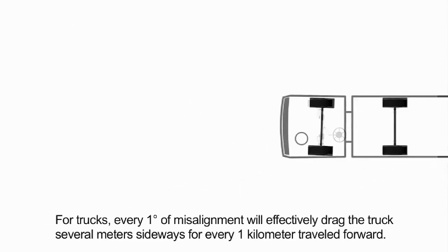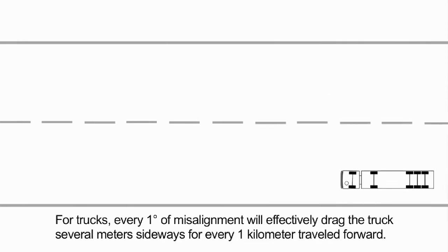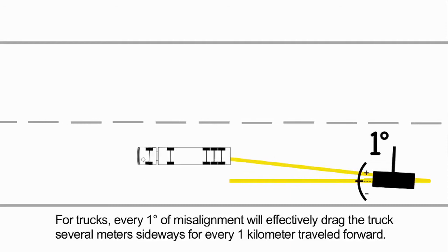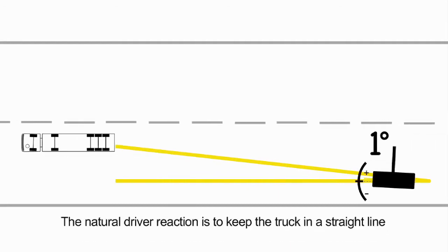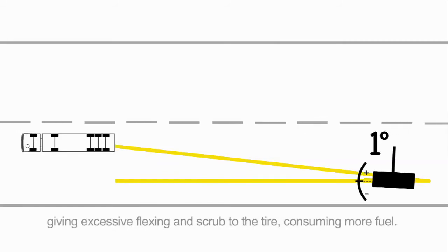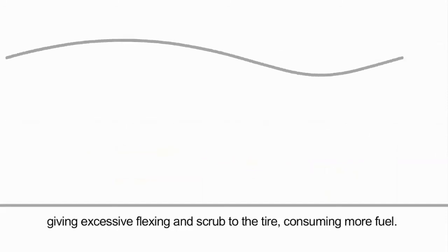For trucks, every one degree of misalignment will effectively drag the truck several meters sideways for every one kilometer traveled forward. The natural driver reaction is to keep the truck in a straight line by applying a small amount of steering input. This gives excessive flexing and scrub to the tire, consuming even more fuel.